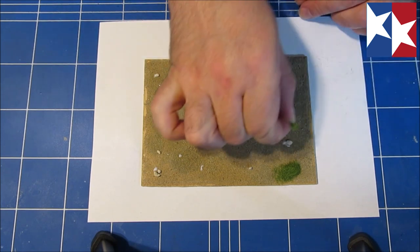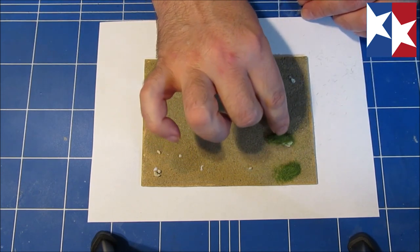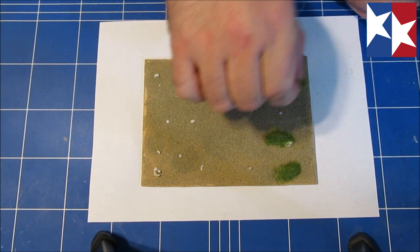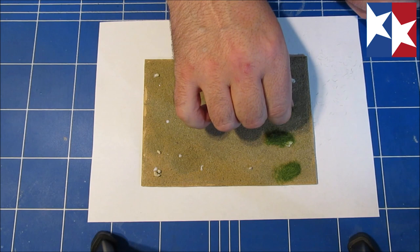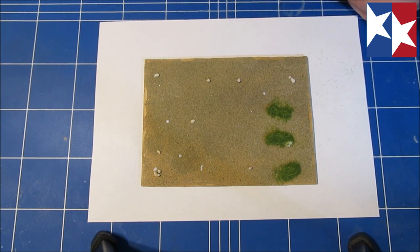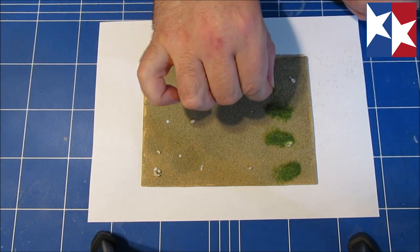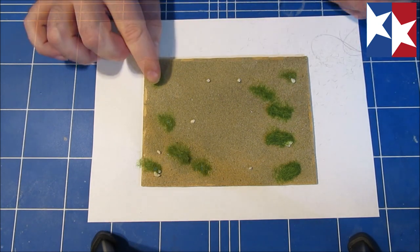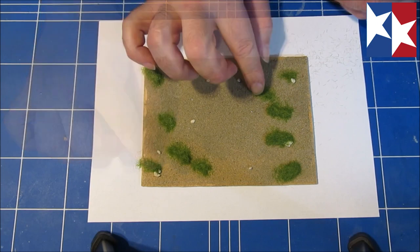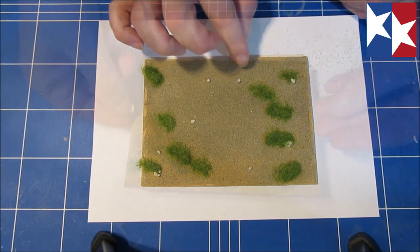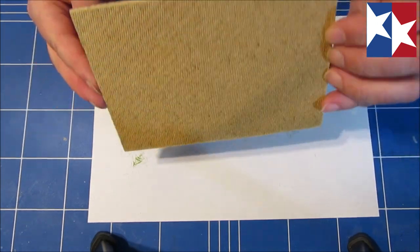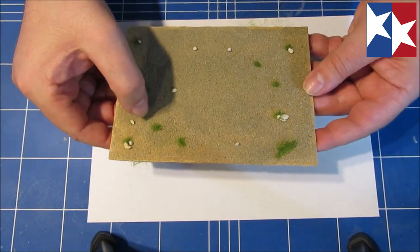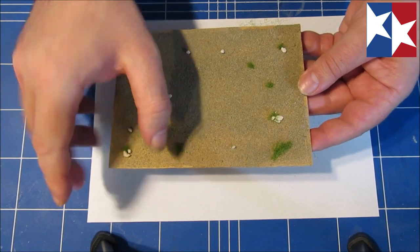And I know it's static grass, you have to have this machine where the grass will stand up straight. But for small tufts like this, this will work just fine. Like so. And we'll let this dry for a bit. So now we have some small bits of grass that will break up the monotony.